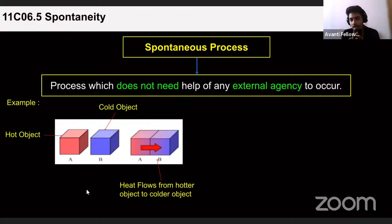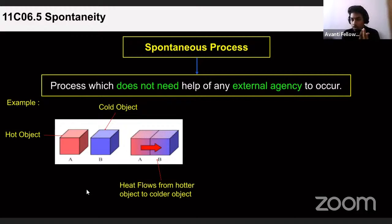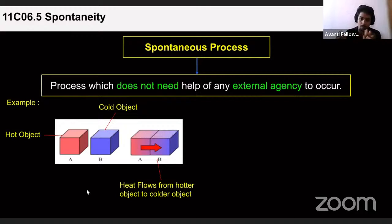If you take a hot water bottle and keep it in a fridge, the surrounding atmosphere absorbs the heat, becomes hot, then the condenser cools it. There we are artificially doing the cooling. But generally, when we keep a hot object near a cool object, heat transfer takes place from the hotter to the colder object spontaneously — no external work like a condenser is needed.